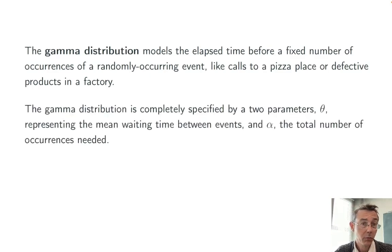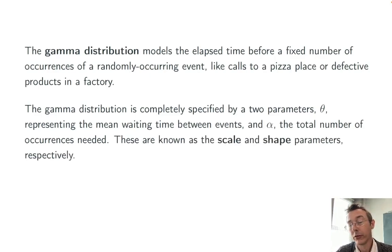A gamma distribution is completely specified by two parameters: theta, which represents the average time between occurrences, and alpha, the total number of occurrences that you're waiting for. These are known as the scale and shape parameters respectively.